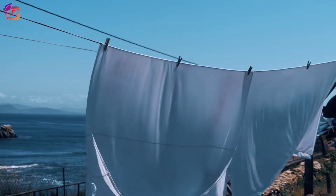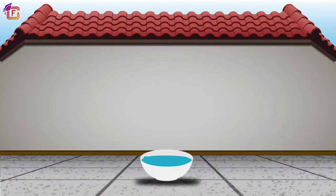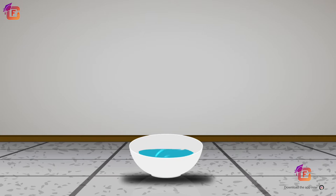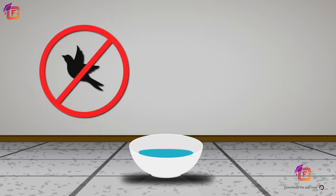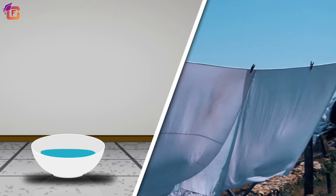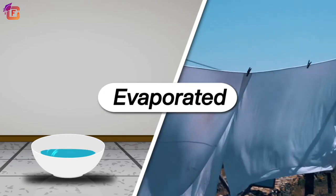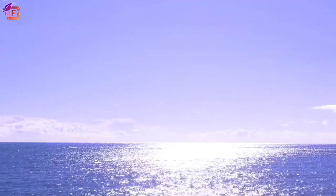You set out a container of water for birds to drink, and when you look again after some time the level of water decreases even when no bird drank from it. The water from wet clothes and the container gets evaporated. Evaporation is the process by which liquid water gets